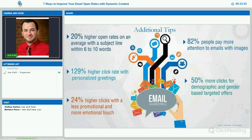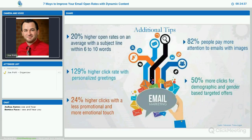Here are some additional tips. 20% higher open rates on average with a subject line within 6 to 10 words — short and simple is the best. Research shows the best subject lines just tell subscribers exactly what's in the email. If you just created a blog post about five tips on how to sell your house, your subject line says 'New blog post: five tips to sell your house.' Keep it short, keep it simple. No reason to send a subject line that says 'open this now' — just tell your customer exactly what's in the email and you'll get more respect and loyalty from it.